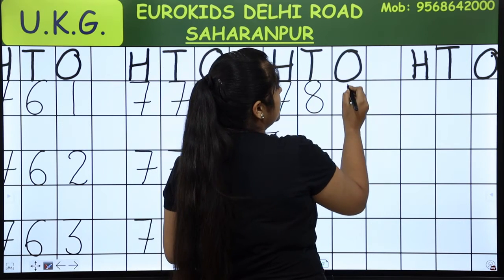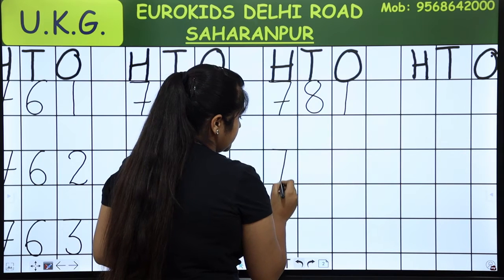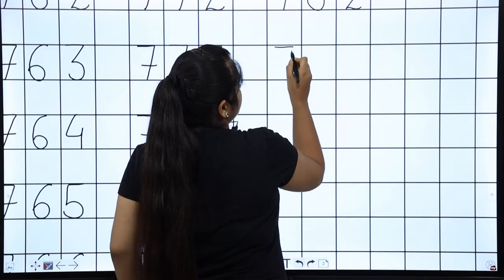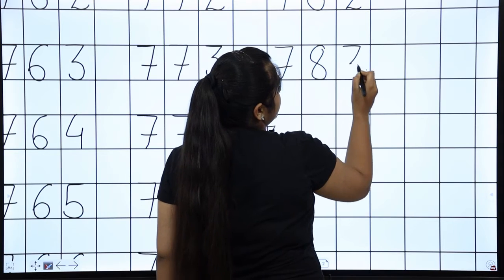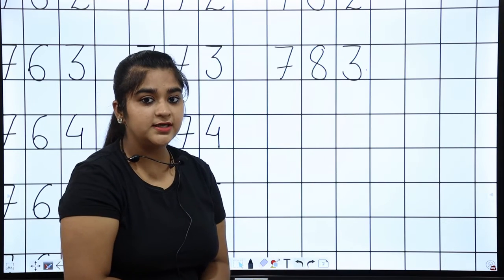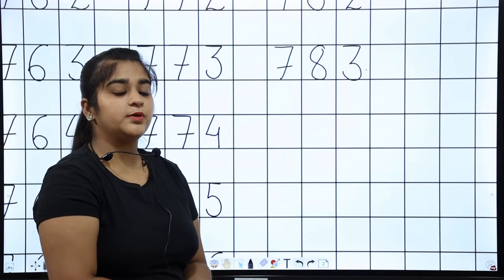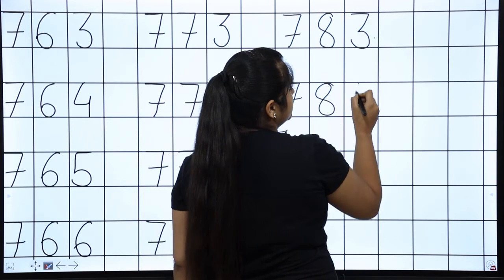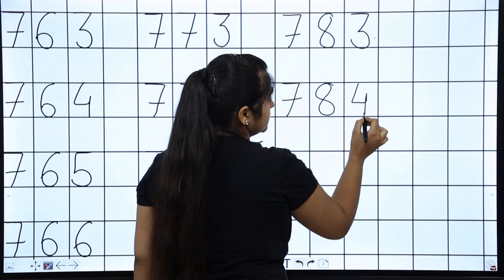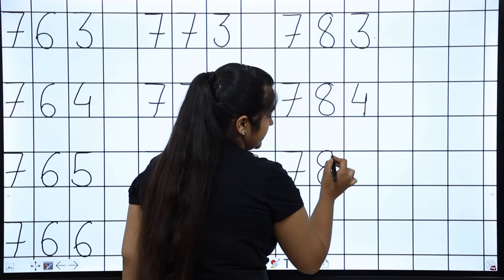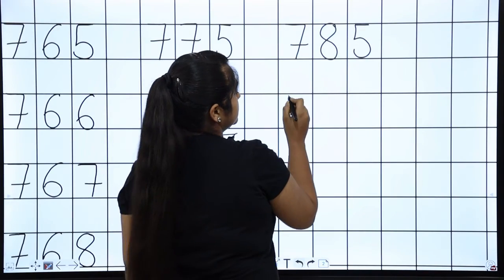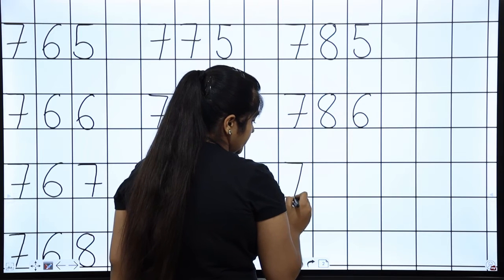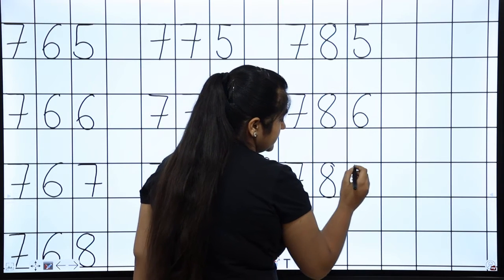Now, what will come after 780? Seven hundred eighty-one, seven hundred eighty-two, seven hundred eighty-three, seven hundred eighty-four, seven hundred eighty-five, seven hundred eighty-six.